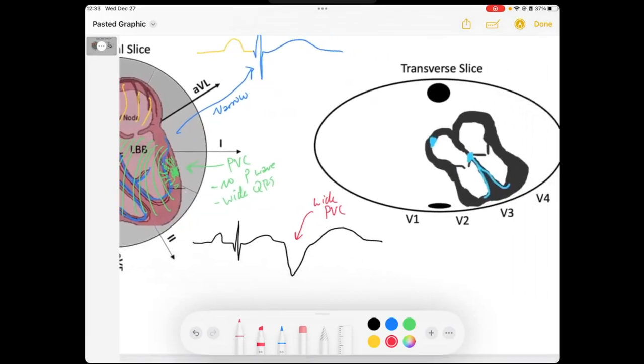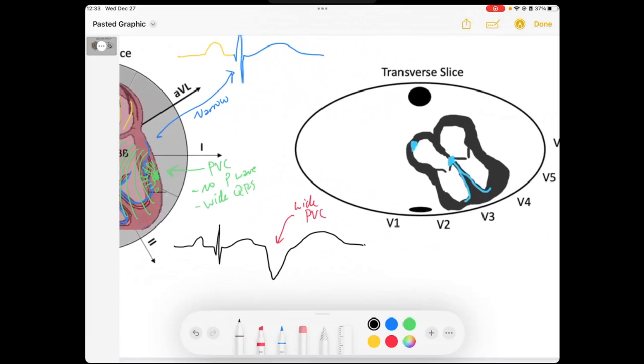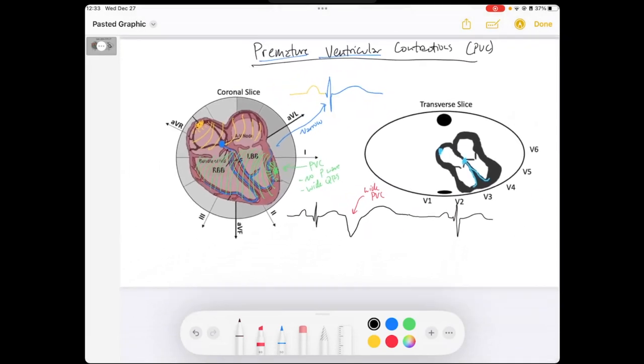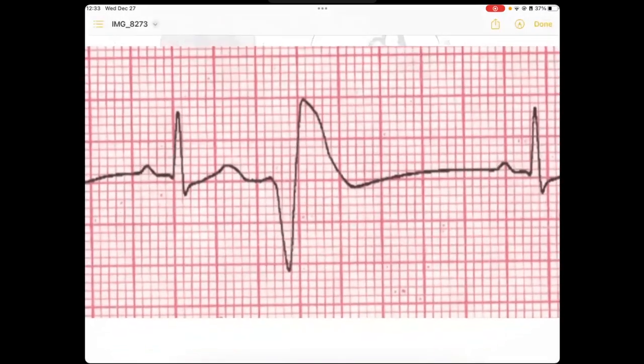That occurs early. And then you might see the sinus node take back over and you have your normal beats. And so let's find an EKG rhythm strip that would demonstrate that.